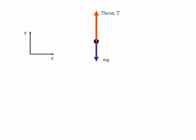The resultant force in the y-direction is then the sum of all the forces in the y-direction, the sum of Fy, which is equal to T minus mg. We're taking the positive y-direction to be upwards.